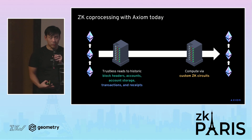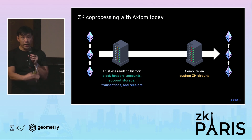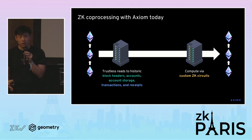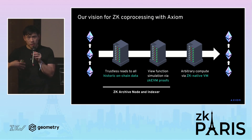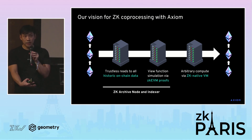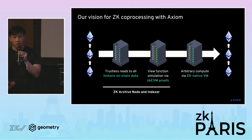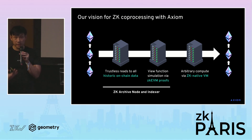Let me give a picture of where we are today and where we're going. Today, we've launched on mainnet reads to block headers, accounts, and account storage. On testnet, we have transactions and receipts. To do compute over those, today you need to deploy a custom ZK circuit. Where we think ZK co-processing is going is to first access the whole of on-chain data, then do post-processing on that data in a way most native to smart contract developers — by applying view functions whose execution is proven using the ZKEVM.